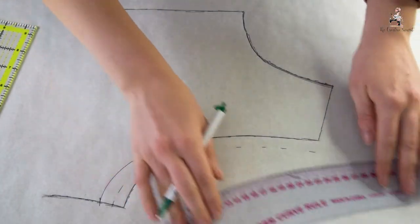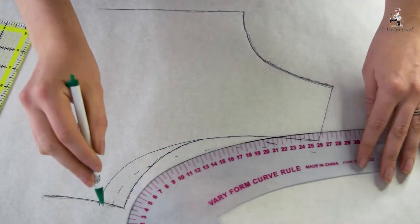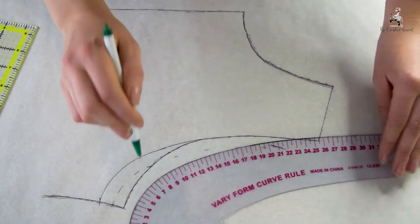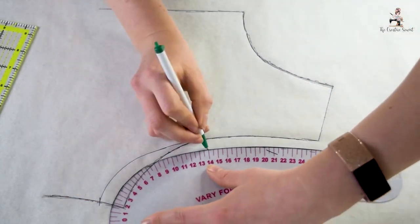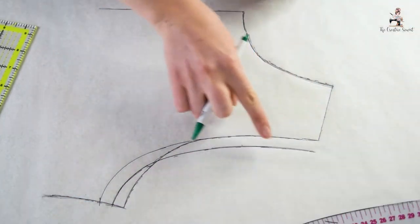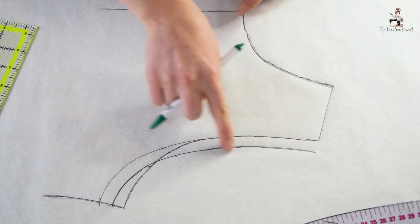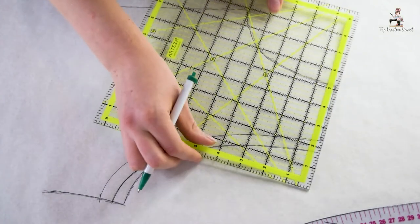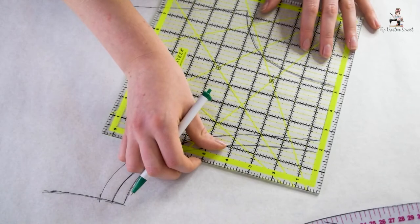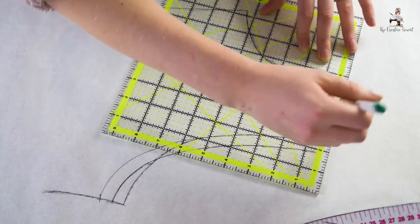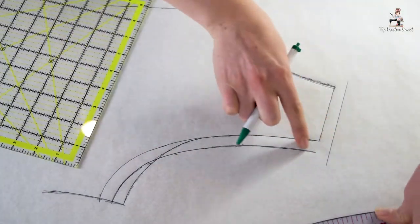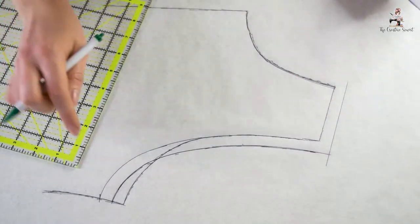Next, I can go in with the French Curve Ruler and just fill in those gaps and smooth out that curve. So I've got my seam allowance added. Then I can simply use my straight edge ruler to add in the seam allowance at the top of the shoulder. And that's all there is to it.